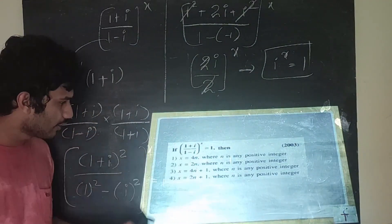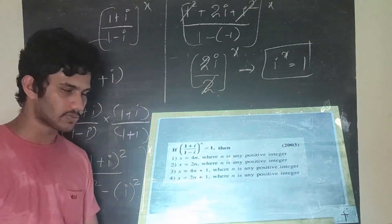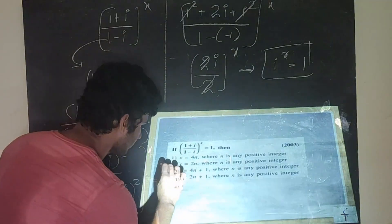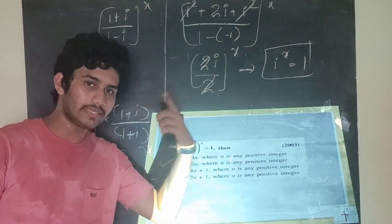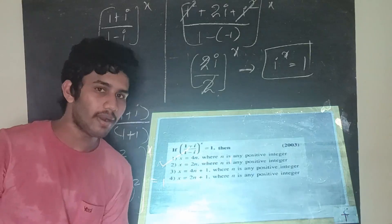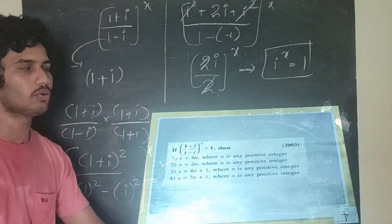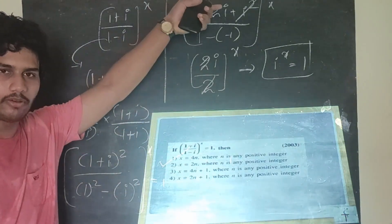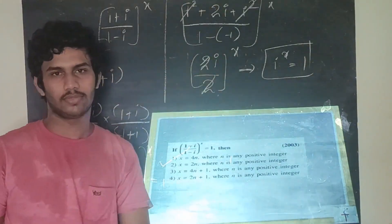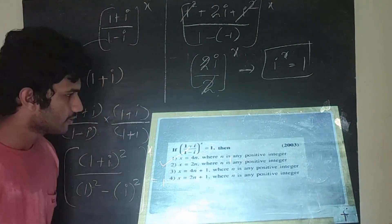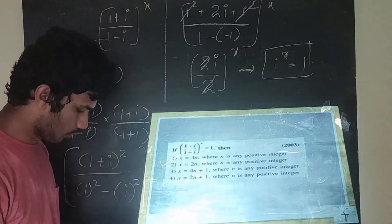The answer is x = 4 because iota raised to any integral multiple of 4 gives positive 1. So the answer is A (x = 4). This question was asked in 2003.